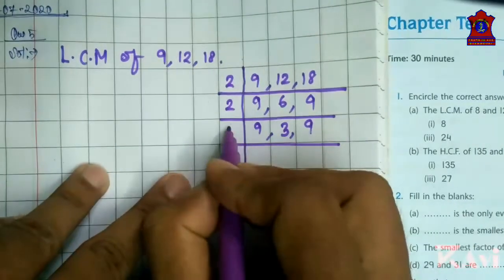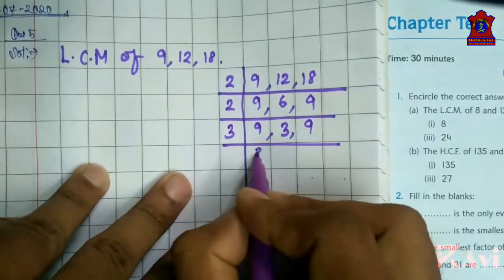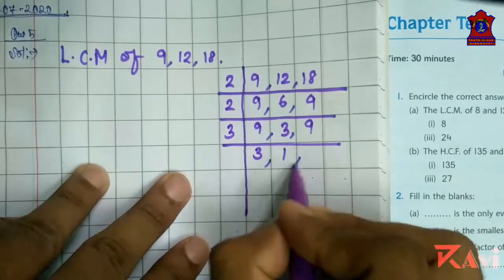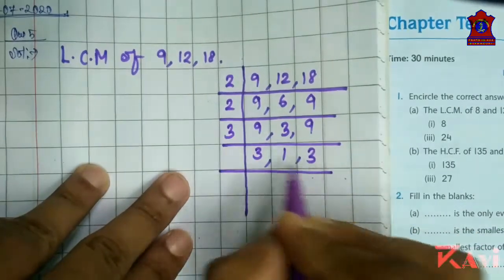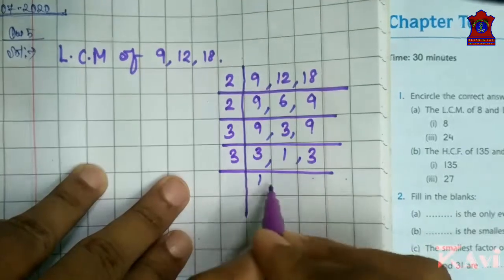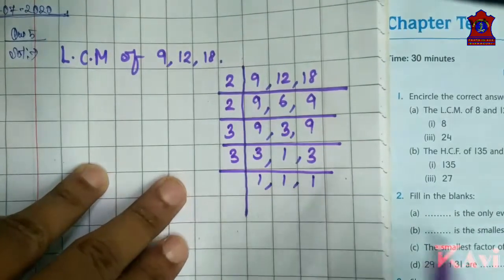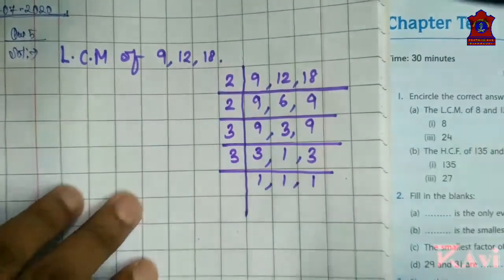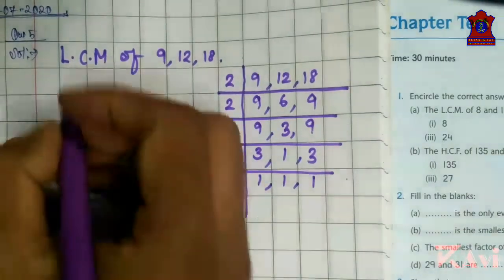So take next prime number which is 3. 3 threes are 9, 3 ones are 3, 3 threes are 9. Again, it is divisible by 3. 3 ones are 3, 3 ones are 3 and 3 ones are 3. 1 was already there, so 1 will remain 1. Now we have got the prime factors.